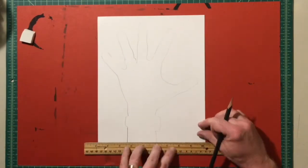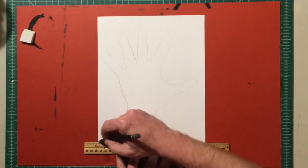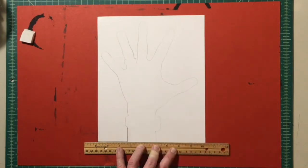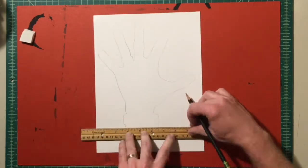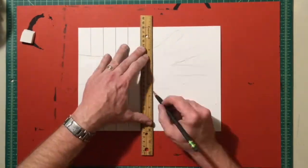If you have a ruler it would be ideal, but you don't need one. We're going to draw a bunch of lines behind the tracing of the hand, so don't draw any lines through the hand right now. I'm just going to use the width of the ruler to measure out the thickness of my lines.